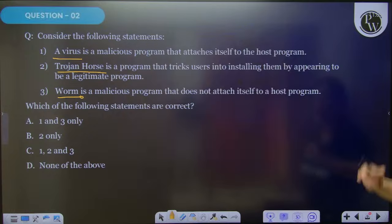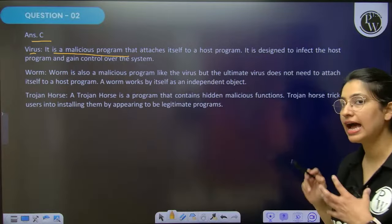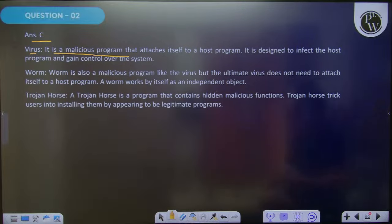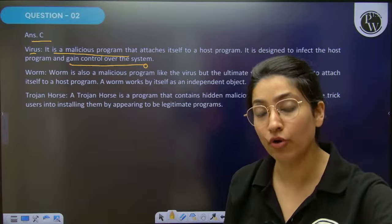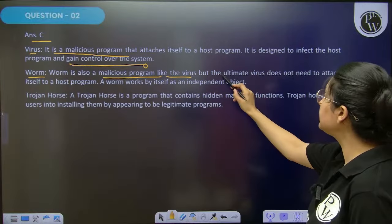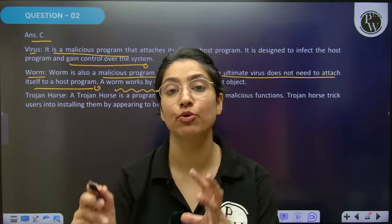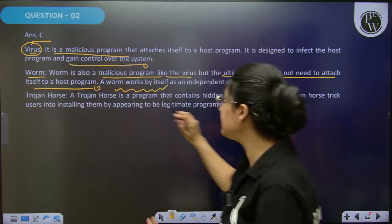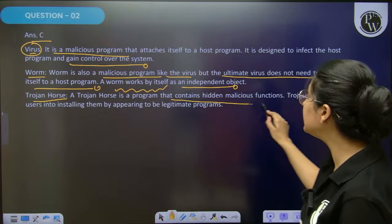54% accuracy for this question. The right answer: what is a virus — a virus is a malicious program which attaches itself to the host program and gains control of the system. A worm is also a malicious program like a virus, but a worm does not attach itself to any host program — worms work as independent objects.